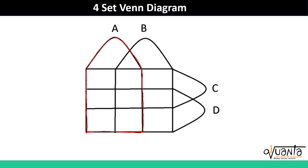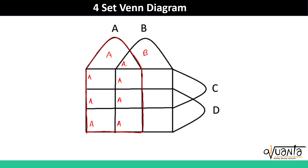So let us try to find out which all regions in this diagram have A. This will have A, this will also have A — A will be here and in all these regions A will be present. We have taken all the regions wherever A is present. Now let us take the regions where B is present. So B will be present here, B will also be present here, here also, in this region also, and in this region also. Apart from that B will also be here, here and here.